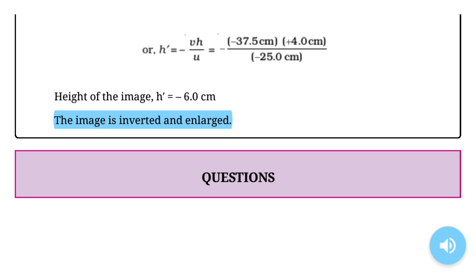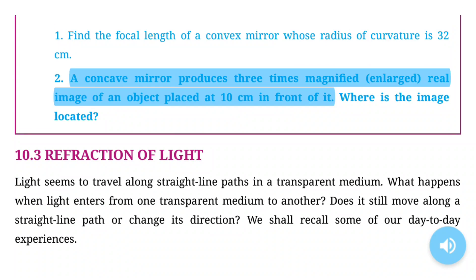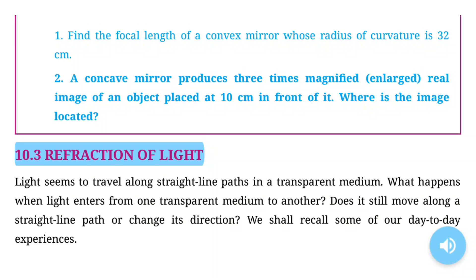Questions: (1) Find the focal length of a convex mirror whose radius of curvature is 32 cm. (2) A concave mirror produces three times magnified enlarged real image of an object placed at 10 cm in front of it. Where is the image located?